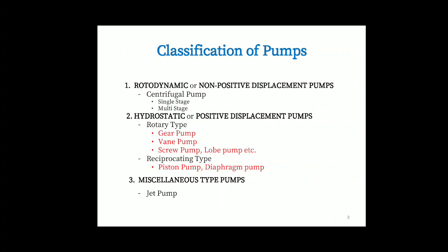Now let us see the different classification of pumps. The first type is called rotodynamic or non-positive displacement pumps called centrifugal pumps, which can be single stage and multi stage. Then hydrostatic or positive displacement pumps: gear pump, vane pumps, screw pump, lobe pump. Then reciprocating pump, piston pump, diaphragm pump, and miscellaneous types like jet pump.